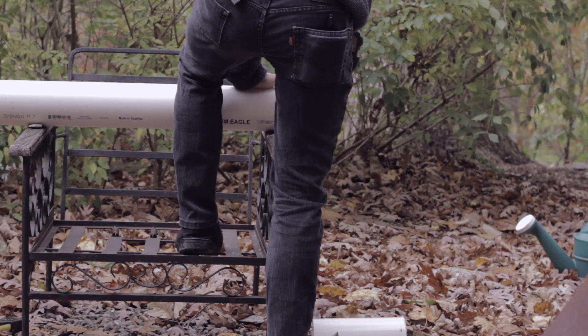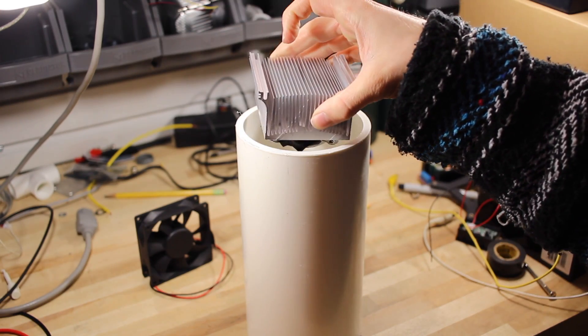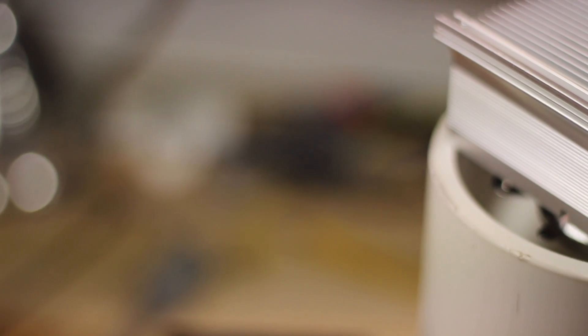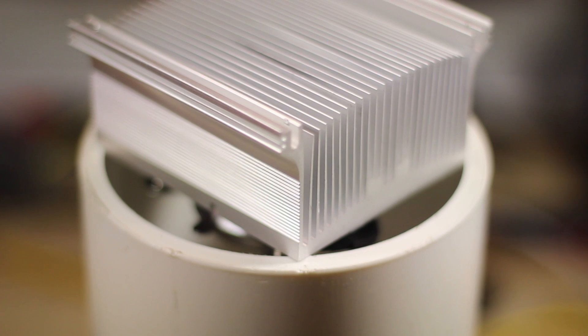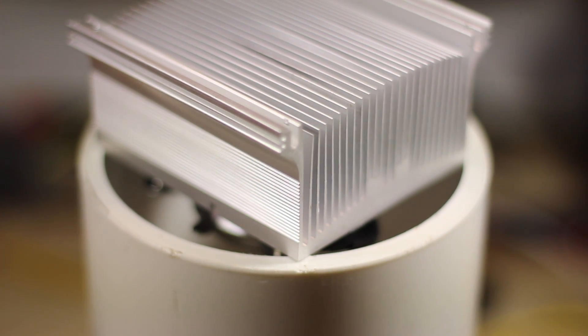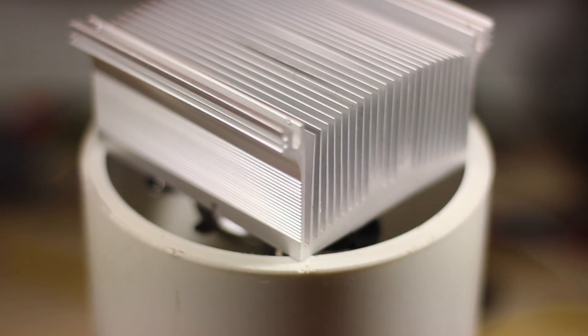After cutting the piece of PVC pipe, I tried putting my heat sink inside of it to find out that the heat sink is just a tad too big. And I could not find a smaller heat sink that would work for this project. So I'm going to modify the heat sink.